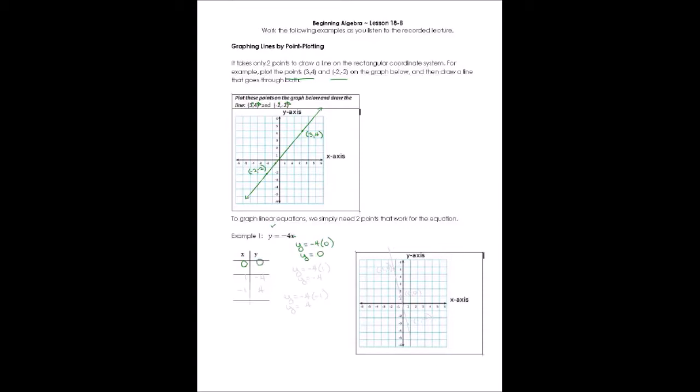Well, now I can solve for y because I only have one unknown variable. y, therefore, is equal to 0. Well, there's the first point on my graph, (0, 0). I'll go ahead and draw it and label it. It's in the very center of the graph, of course.